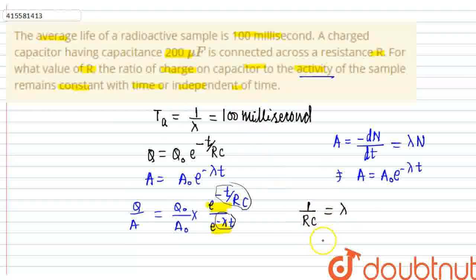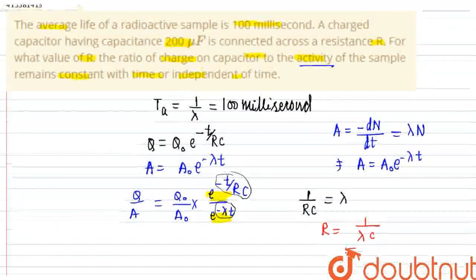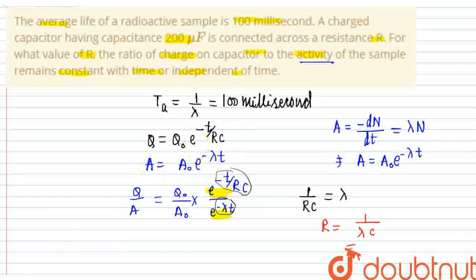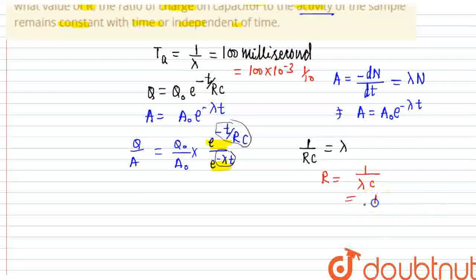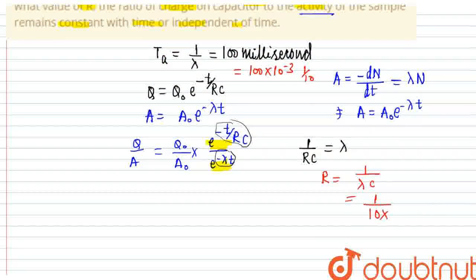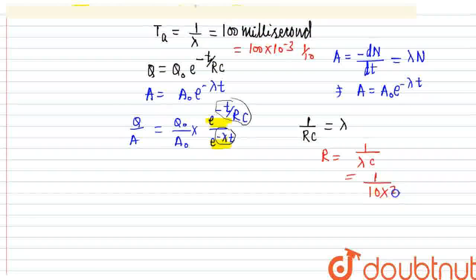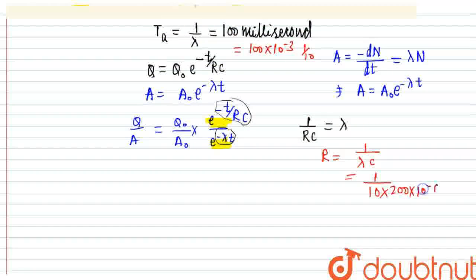Means e to the power minus t over RC upon e to the power minus lambda t. So capital R is 1 over lambda times C. So we can solve it. Lambda is 1 over 100 milliseconds, which is 100 times 10 to the power minus 3 seconds, which is 10 seconds. And C is 200 times 10 to the power minus 6 farads.